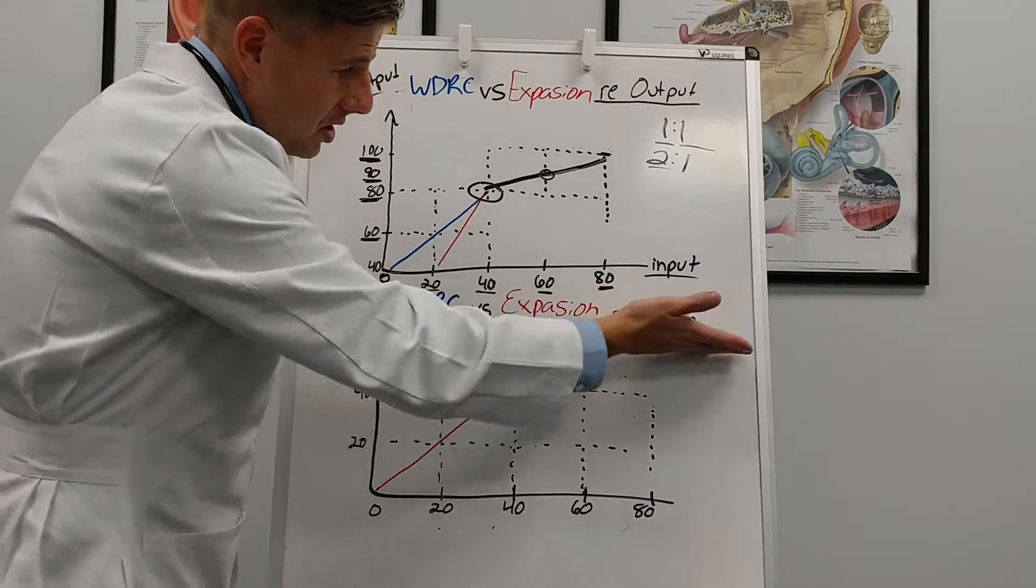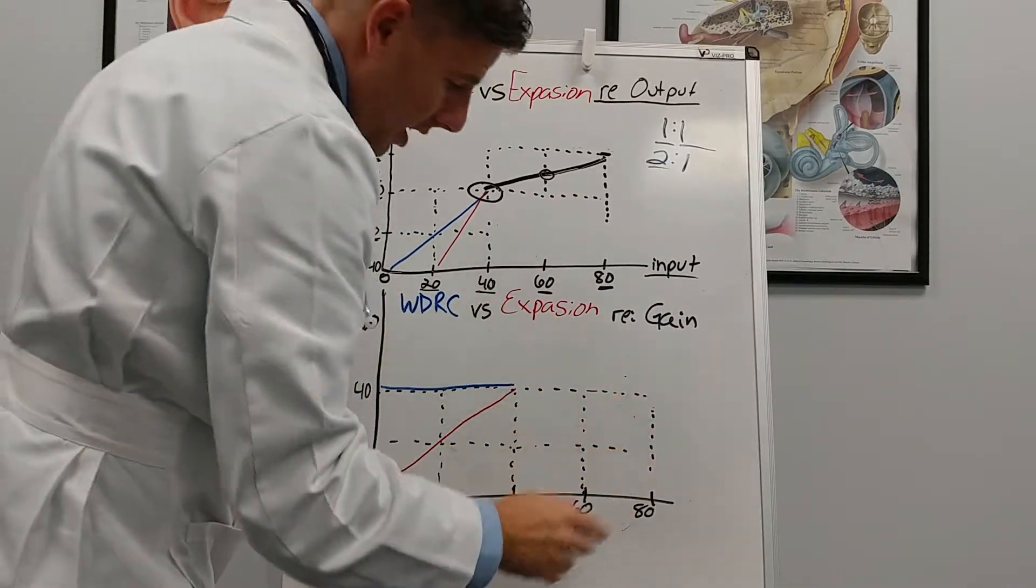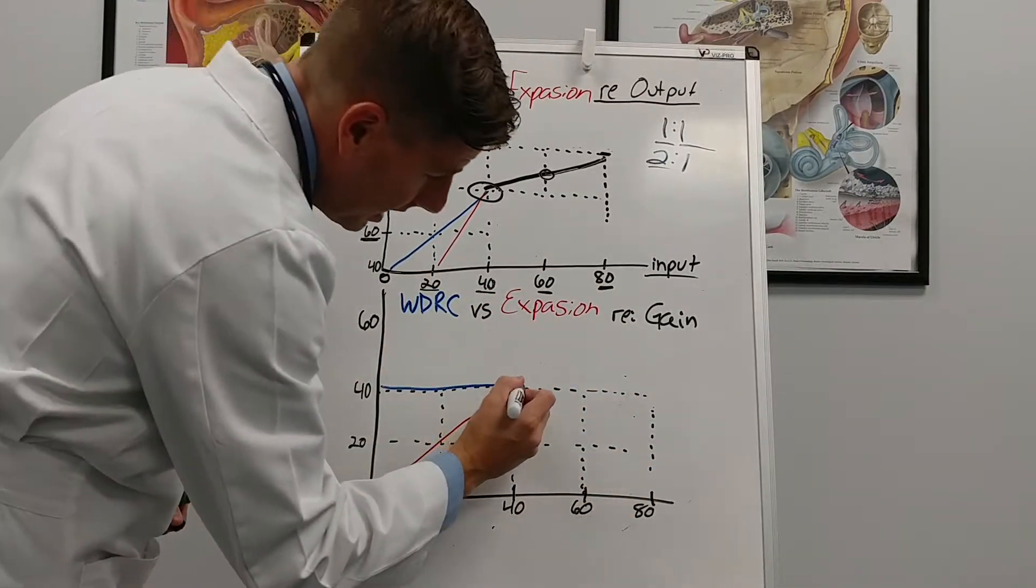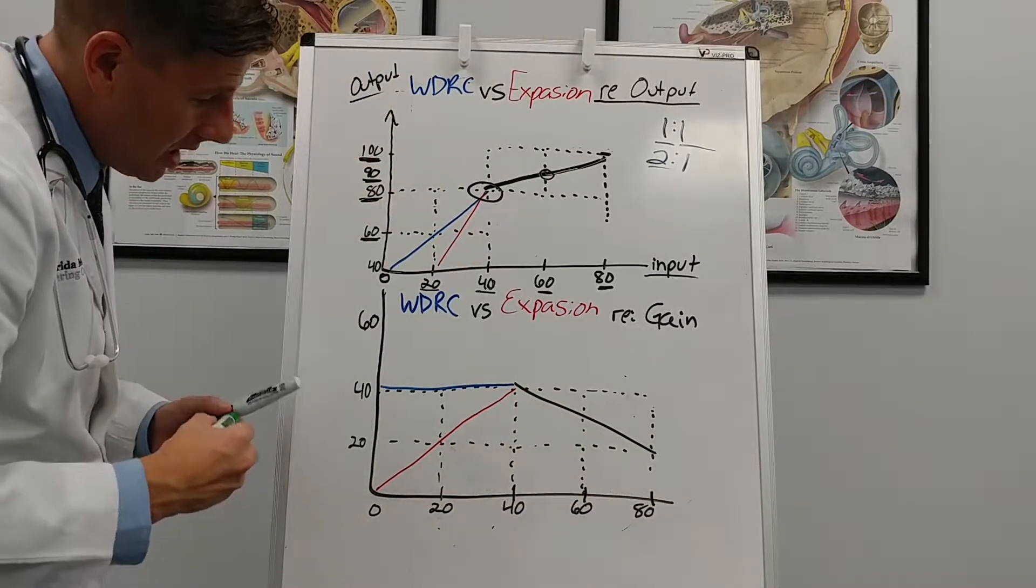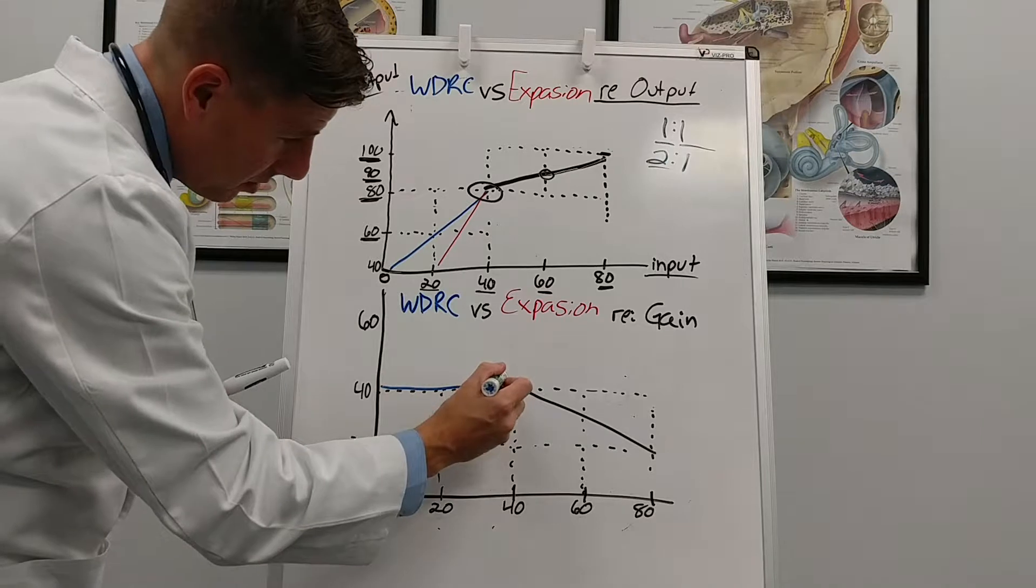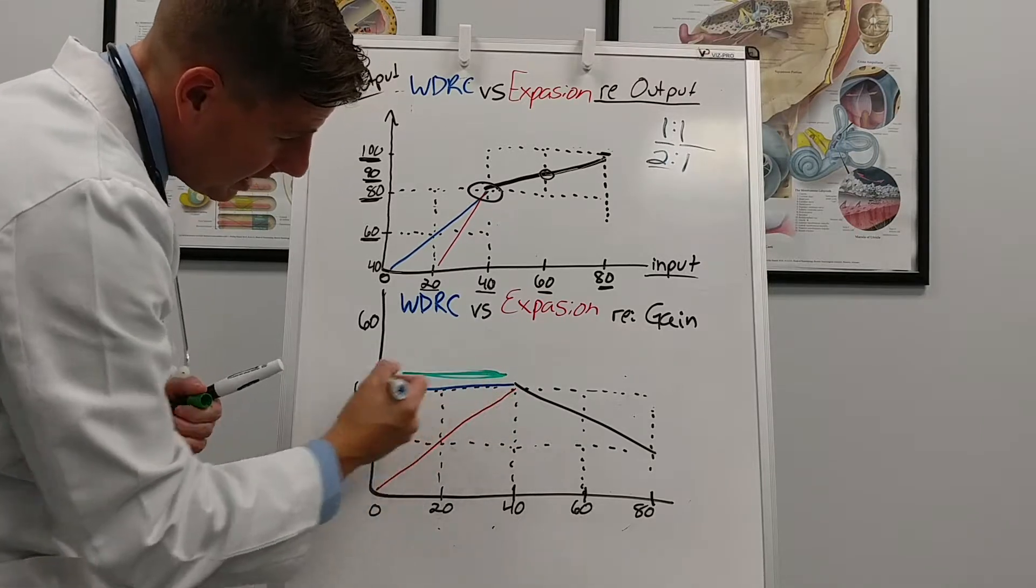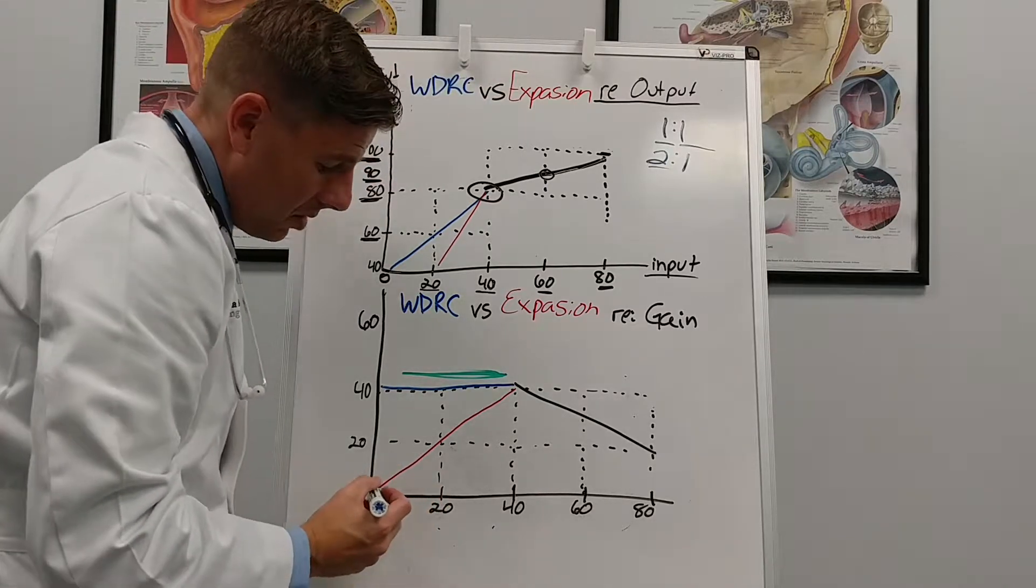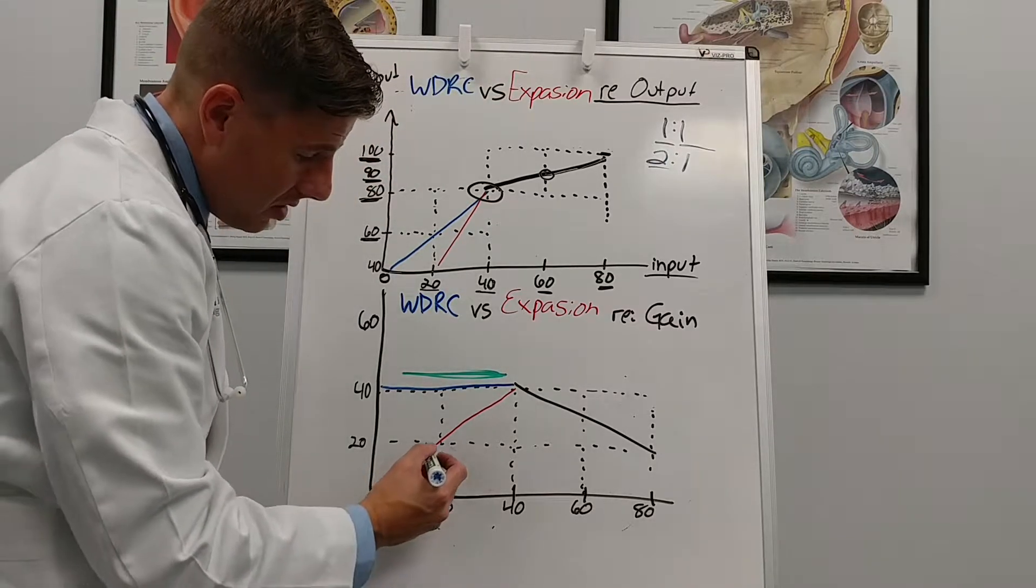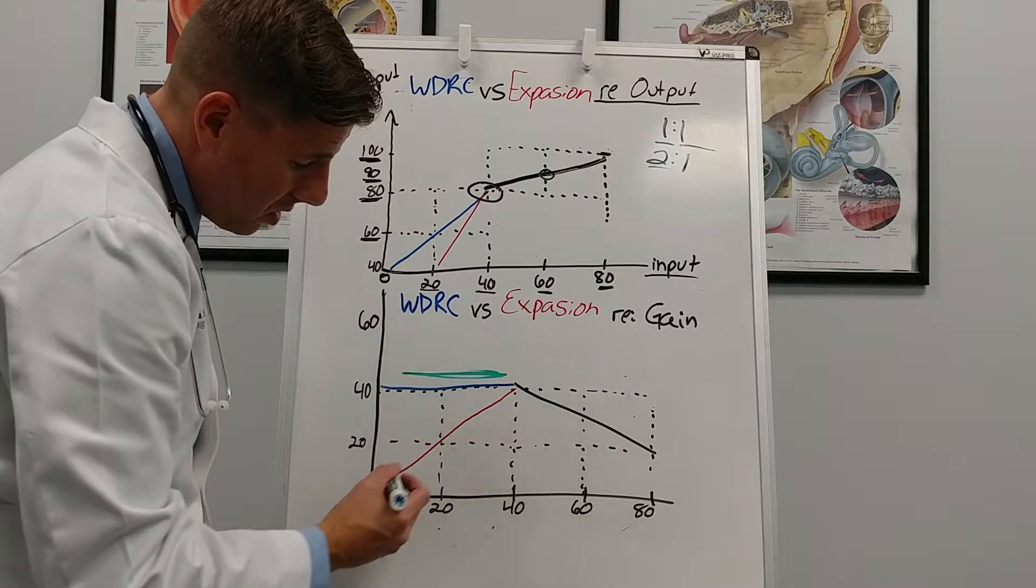So the other thing to explain is the same scenario but what we'll be explaining it at is gain. So what's happening here is I'm adding 40 decibels of gain. And in this case this line is called a compression limiting line. Again in my lower decibels I want my expansion on so I can keep my circuit noise quiet.